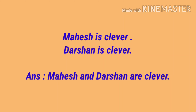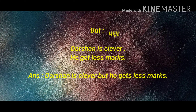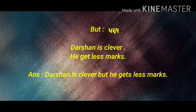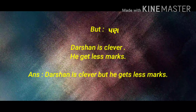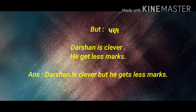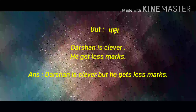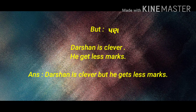AND is used to join two adjectives, two nouns, two pronouns, or two verbs. Second conjunction is BUT. Its Gujarati meaning is 'પરંતુ'. BUT joins two contrasting sentences.